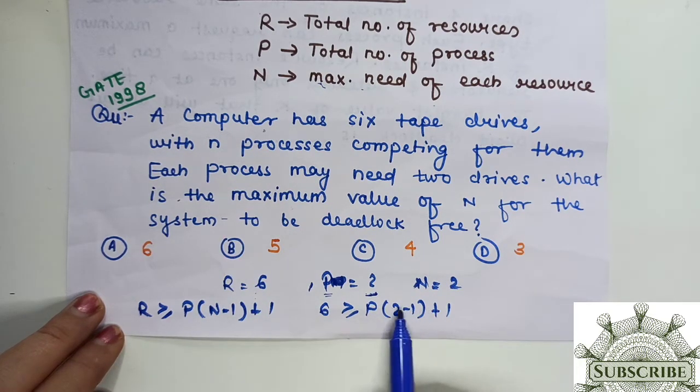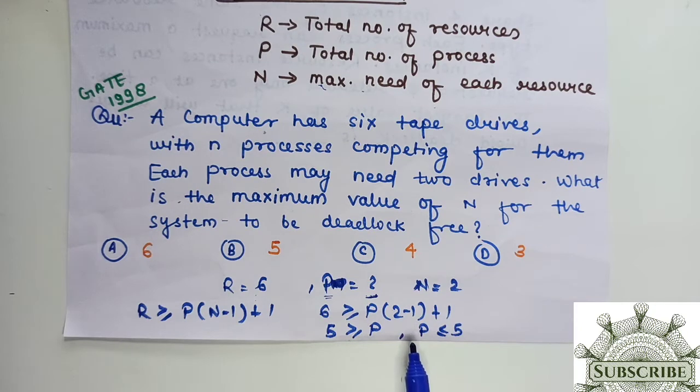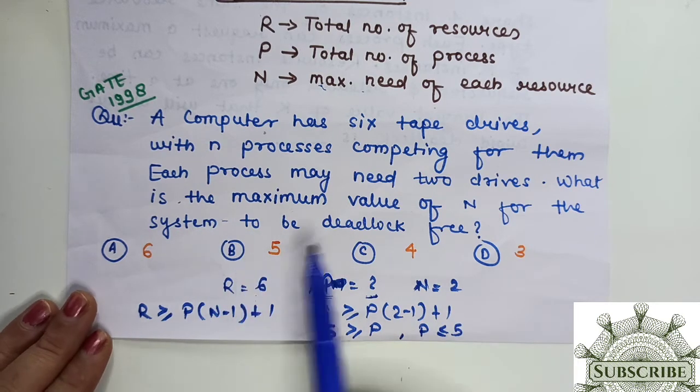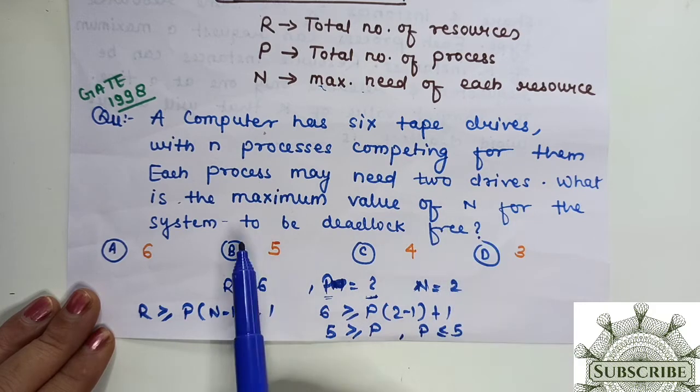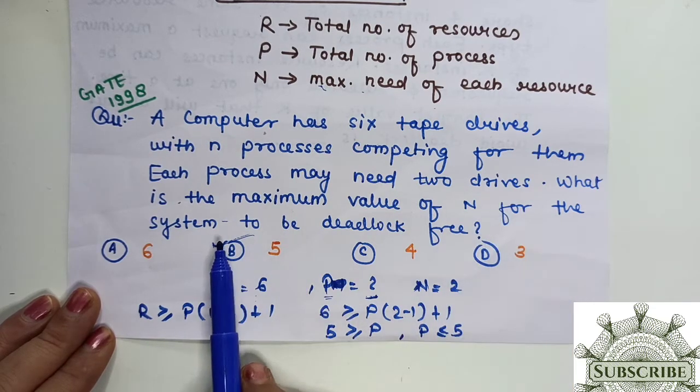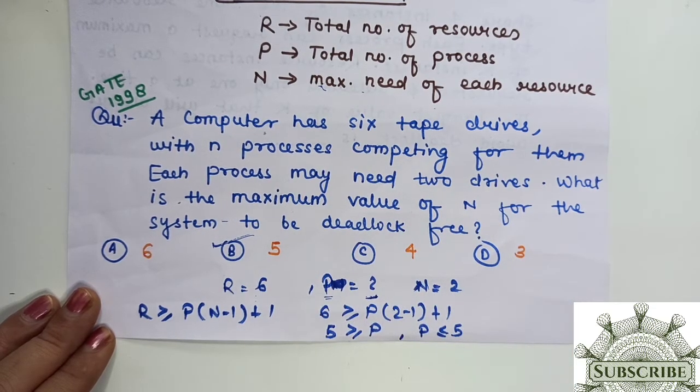This is 1 and here it becomes 5. So what is it saying? The value could be equal to 5 or less than 5, then only we are able to avoid the deadlock. So what is the maximum value of n? The maximum value is 5.